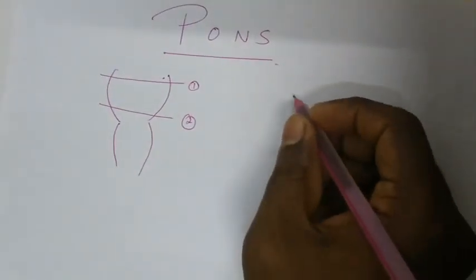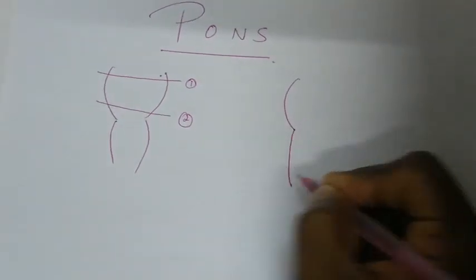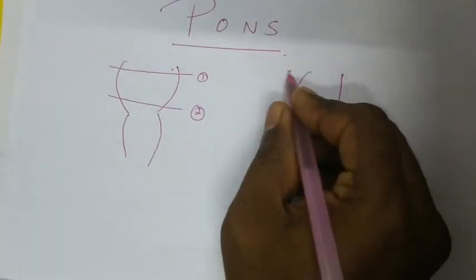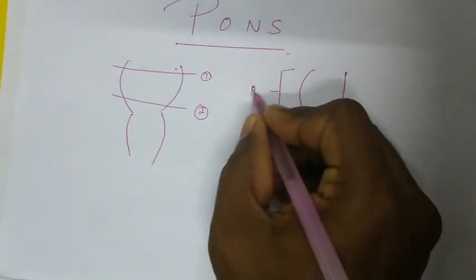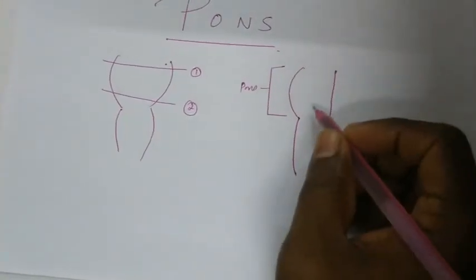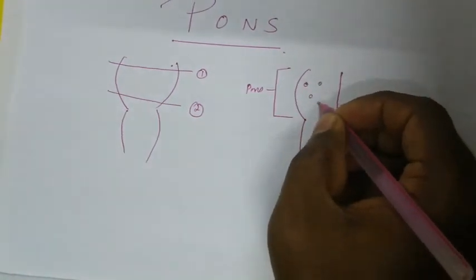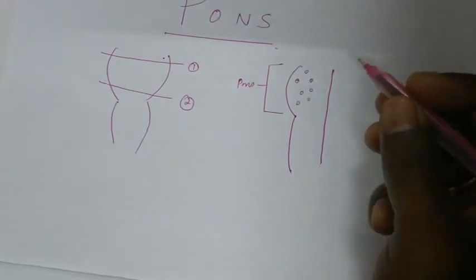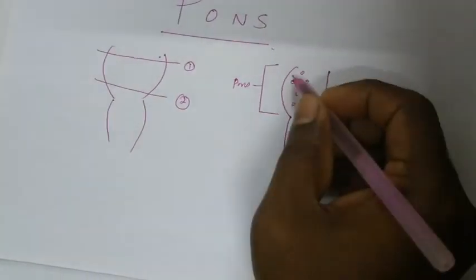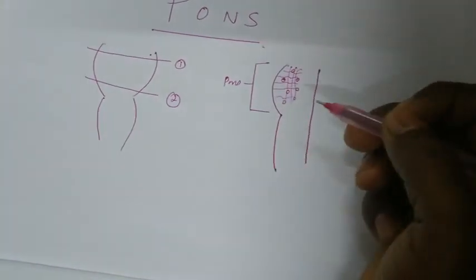As you know by now, the ponds has two parts: the ventral aspect and the dorsal aspect. The ventral aspect contains many scattered masses of gray matter which are called the pontine nucleus. This ventral aspect also contains multiple transversely and vertically running fibers.